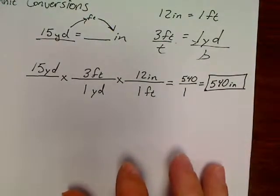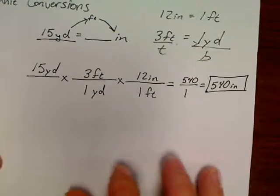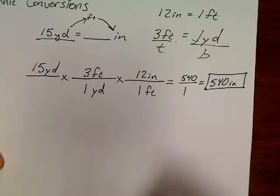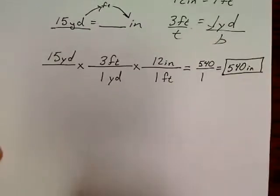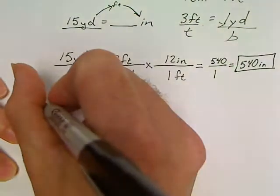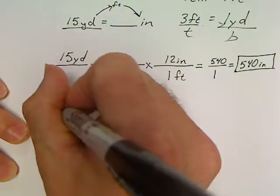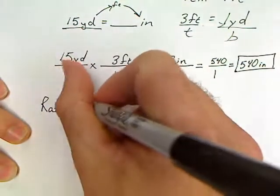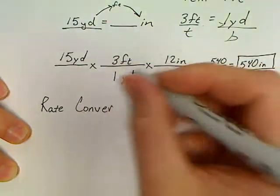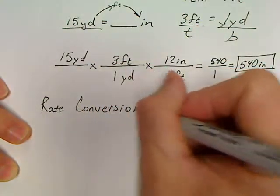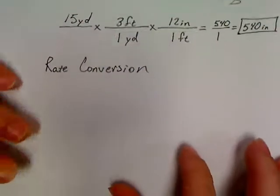The only thing you're going to see different in physics this year is conversions of squares and cubes, and what's called rate conversions. If you can do a conversion like we've just done, then you can do a rate conversion.